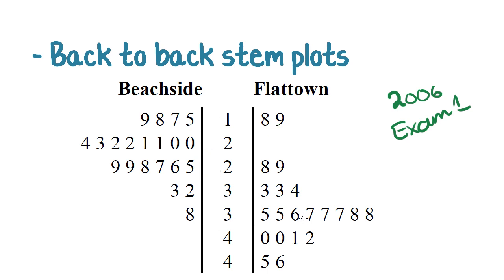Working with back to back stem plots is very similar to just one sided stem plots. So long as you remember that the numbers on this left side are counting from the bar and moving away. So if we were asked to find the range of just the beach side, this would be the highest number which is a 38, and this here would be the lowest number which is a 15. So to find the range you would say 38 minus 15.